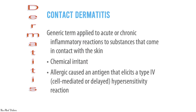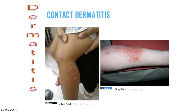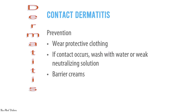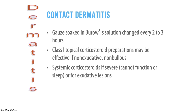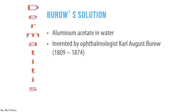Contact dermatitis is a generic term for acute or chronic inflammatory reactions to substances that come in contact with the skin. They can be chemical irritants or allergic reactions caused by an antigen — a Type 4 hypersensitivity reaction. Prevention is by wearing protective clothing. If contact has occurred, wash with water and a weak neutralizing solution, use barrier creams, and apply Burow's solution (aluminium acetate in water, invented by ophthalmologist Carl August Burow), changing gauze every 2–3 hours. Class 1 topical steroid preparations may be effective if non-exudative or non-bullous; systemic steroids are used if severe.